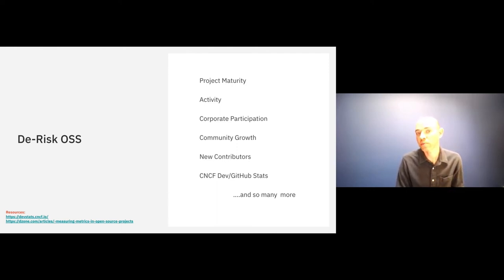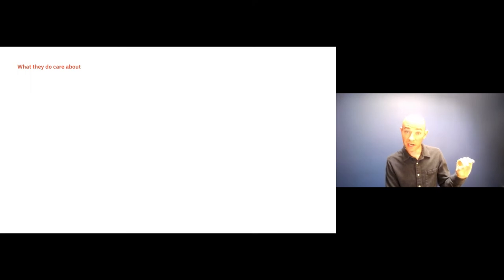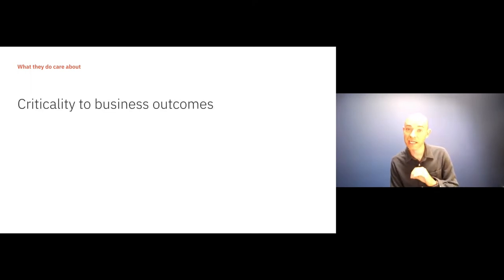Now, thanks to the CNCF, thanks to a lot of other projects out there, which you can see in these resources, you can now determine what is the project maturity, what does the activity look like, corporate participation, community growth, new contributors. The CNCF DevStats is a phenomenal place to start. Of course, you could always go with GitHub stars as well. But now you're armed with justifying a technology decision at the technology layer. But when you're thinking about how business decisions are getting made, I can tell you from firsthand experience that this is just a small component of what you need to be doing to drive that change.